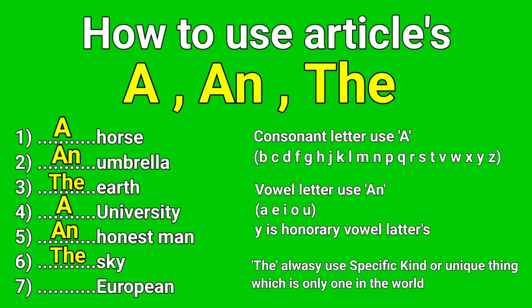Question number seven: blank European. The starting letter 'e' is always a vowel letter, but it pronounces as a consonant sound — 'yoo' as in 'European.' So because it has a consonant sound, you use 'a.' The answer is 'a European.'